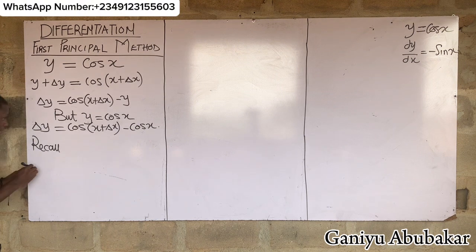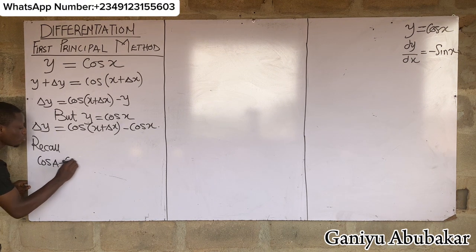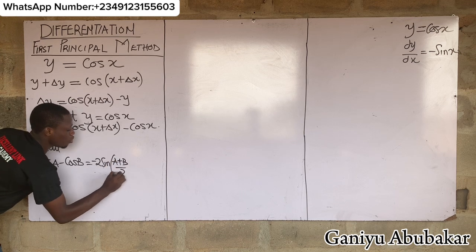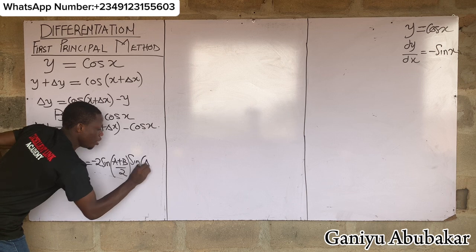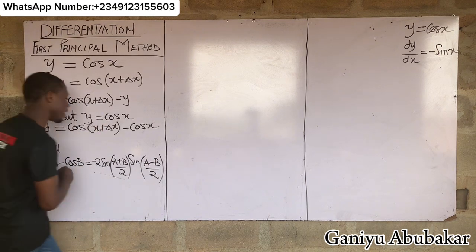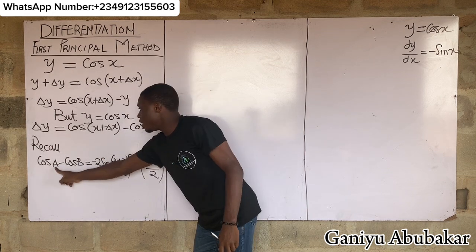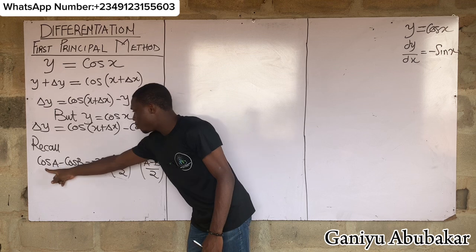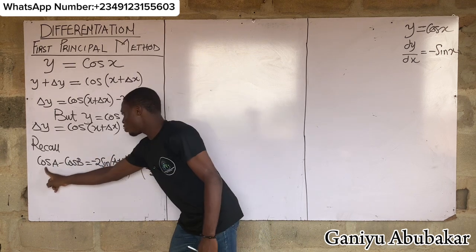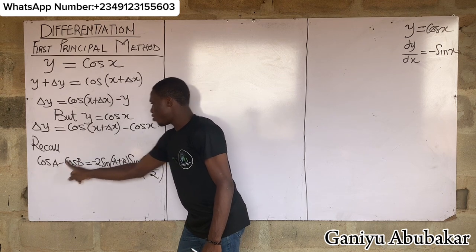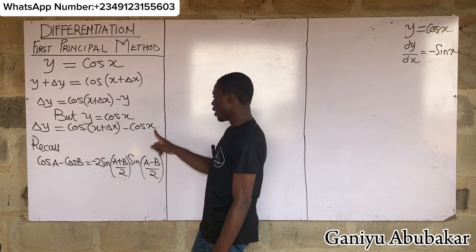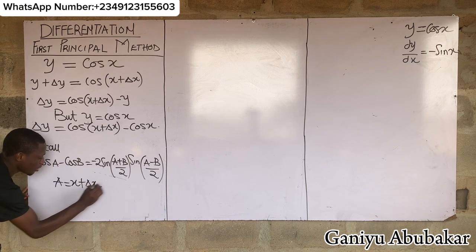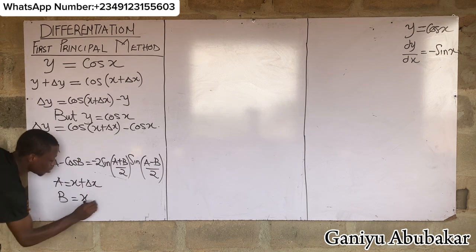The identity says: cos A minus cos B equals minus 2 sin((A+B)/2) times sin((A-B)/2). Comparing our expression, cos(x + Δx) minus cos x, we identify A as x + Δx and B as x.